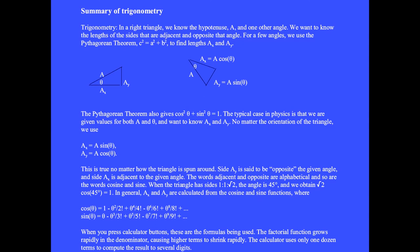In general a_x and a_y are calculated from the cosine and sine functions. cos(θ) = 1 - θ²/2! + θ⁴/4! - θ⁶/6! and so on. Notice that the cosine is 1 for θ = 0 and that the cosine contains all the even powers of θ.